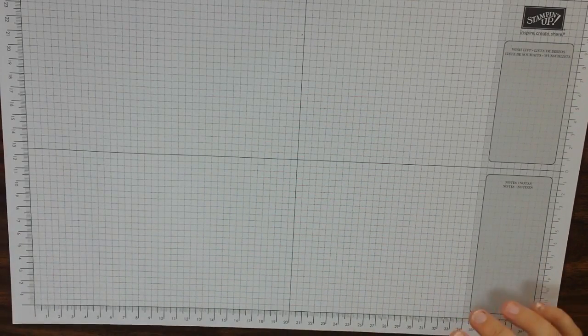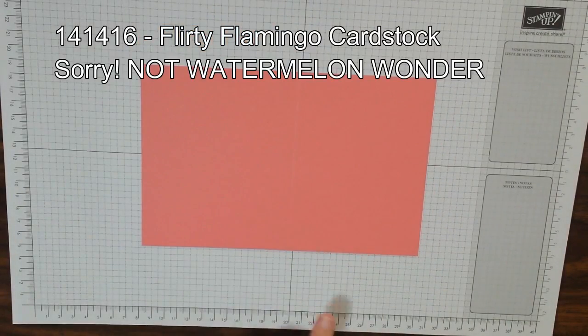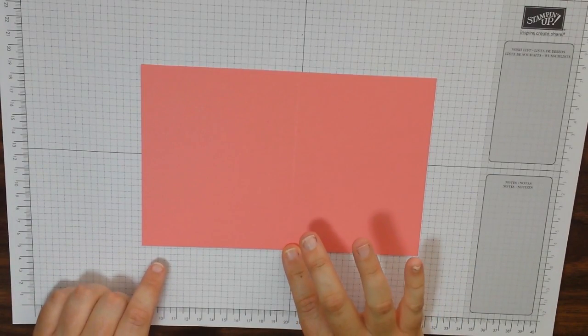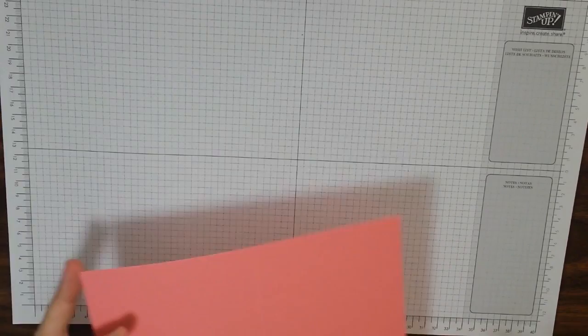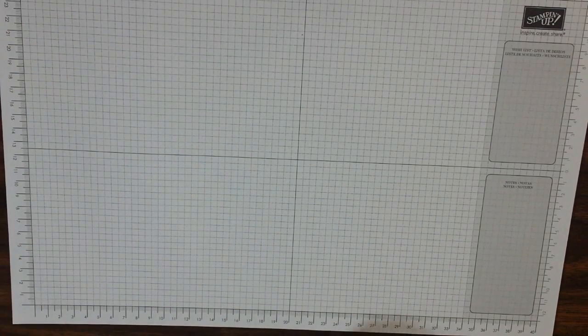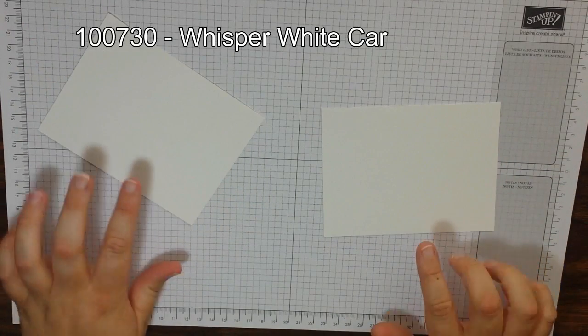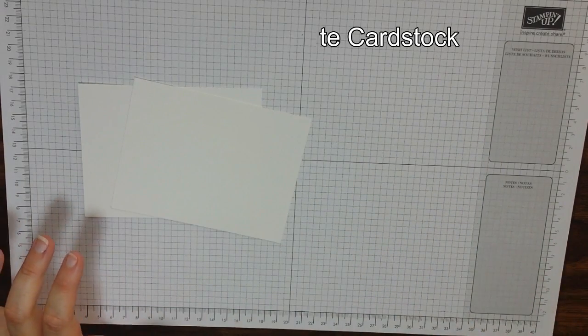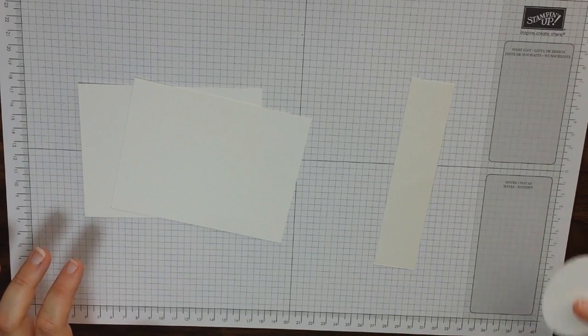First, let's go through some of the products that we're going to need today. So you're going to need an 8.5 by 5.5 piece of Watermelon Wonder, and I went ahead and scored that at 4.25. You're going to wind up folding that in half. Then we're going to need two pieces of 4 by 5.25 Whisper White and some extra scrap Whisper White as well.